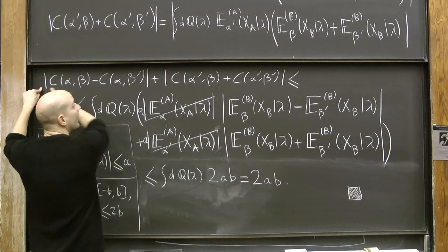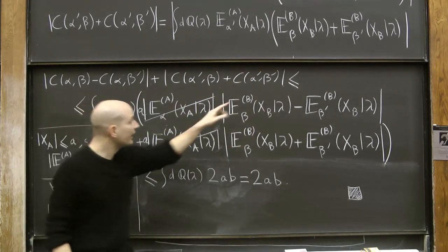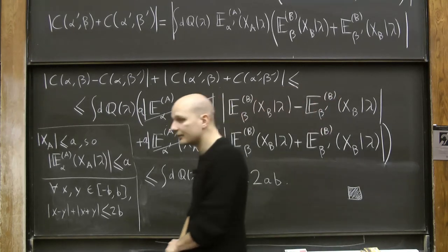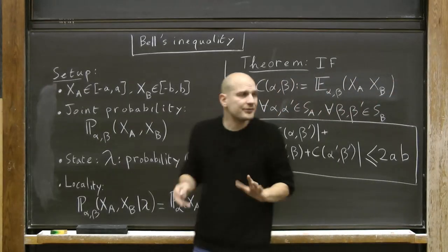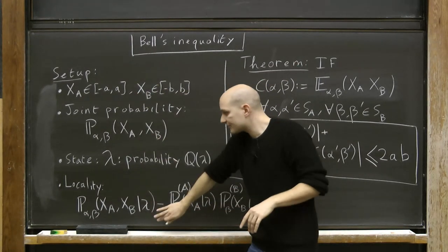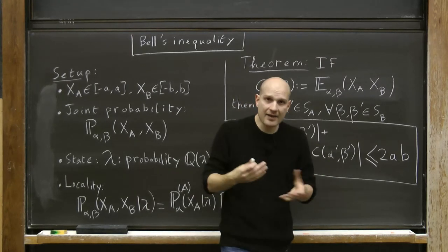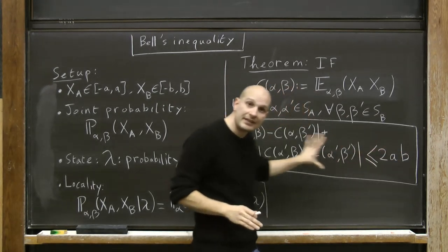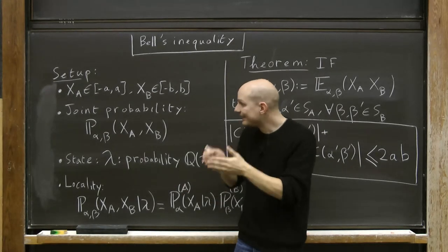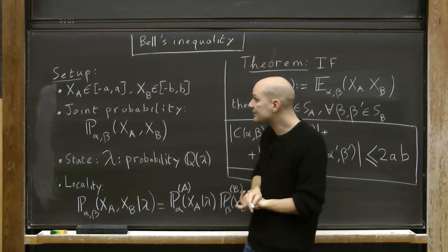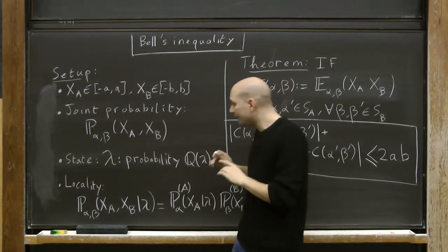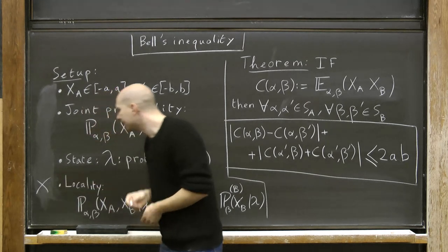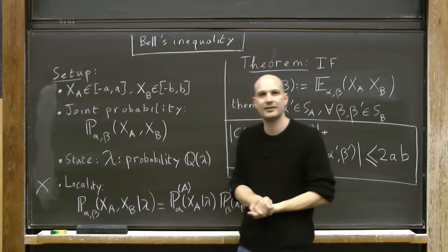In conclusion, I've shown that this combination of correlation functions is smaller or equal to 2ab, which is the statement of the CHSH-Bell inequality. We've proved the theorem under these assumptions. This means that if we have a theory of nature compatible with the predictions of quantum mechanics and that theory predicts Bell's inequality is violated, then necessarily at least one of the four assumptions must be false.